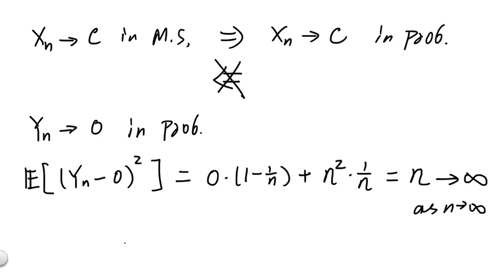And as a result, the limit as n going to infinity of E of yn minus 0 squared is infinity and is not equal to 0. And there we have it. Even though yn converges to 0 in probability, because the variance of yn in some sense is too big, it does not converge in a mean squared sense.